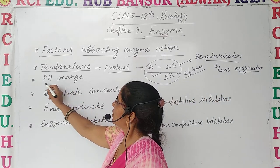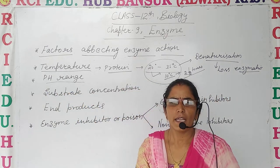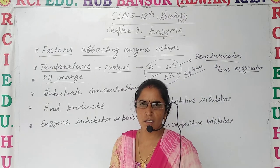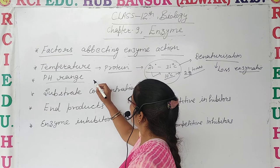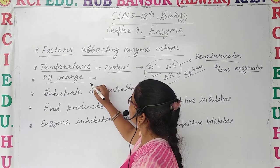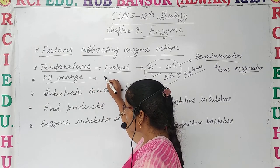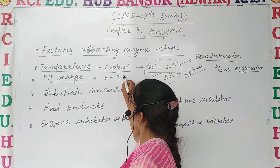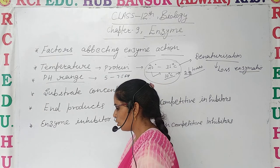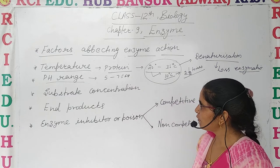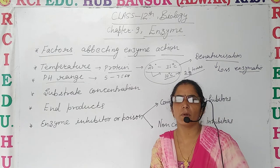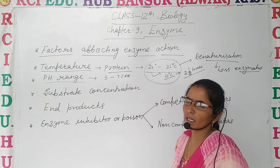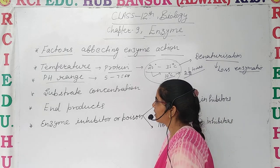Another factor which affects enzyme activity is pH range. Enzymes are sensitive to pH and they perform their optimum activity at a pH range of 5 to 7.5. This is the specific pH range for enzymatic activity. Beyond or below that range, enzymatic activity is reduced.